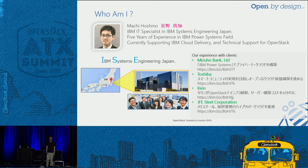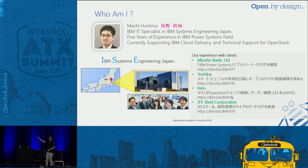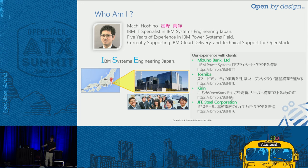So, who am I? My name is Machi Fushino. On the slide there, in pink, you can see four kanji letters — that's how I write my name in Japanese. If you're aware of Japan, all kanjis have meanings. They mean star, field, truth, and knowledge.